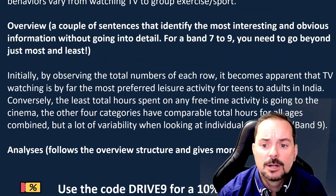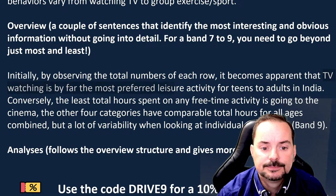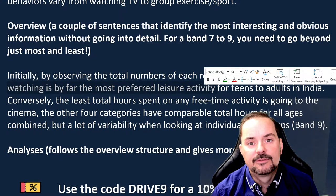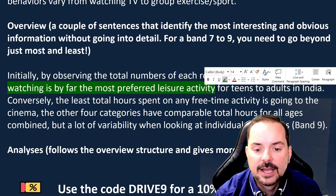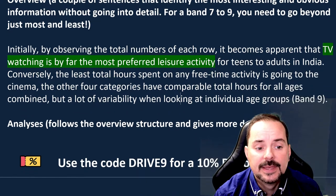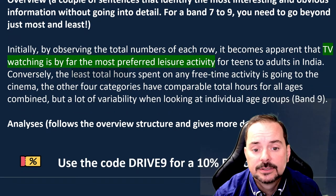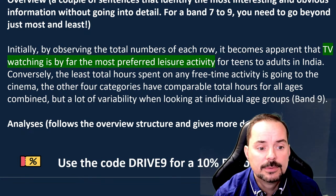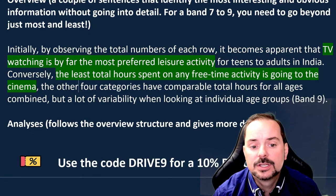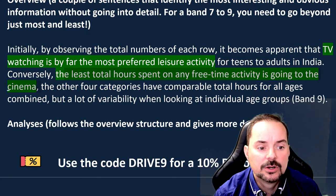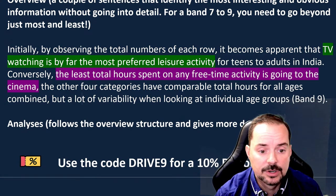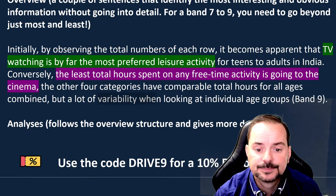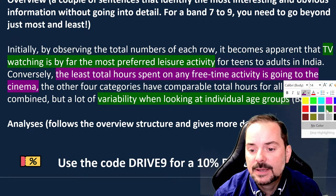We'll talk about TV watching as the most preferred leisure activity — that's point one. Then we mention the least hours going to the cinema — that's point two. And then we talk about the variability of the other four categories for different age groups. That's basically the structure of the essay.